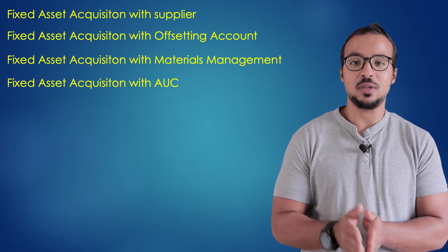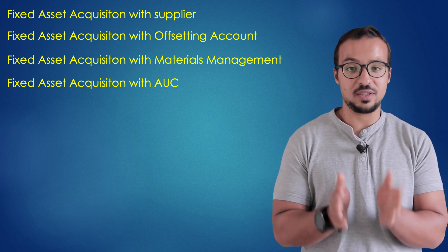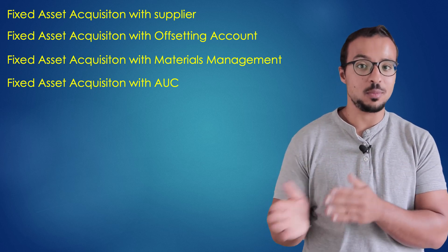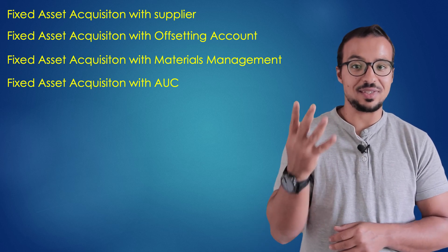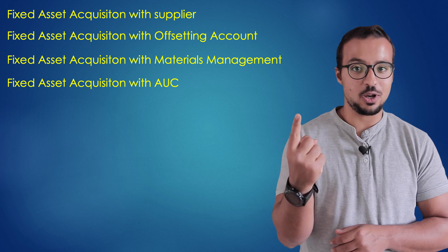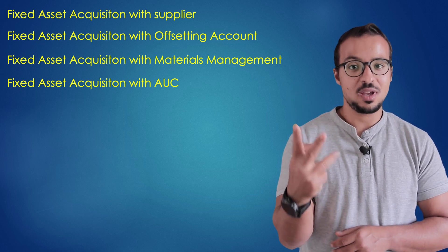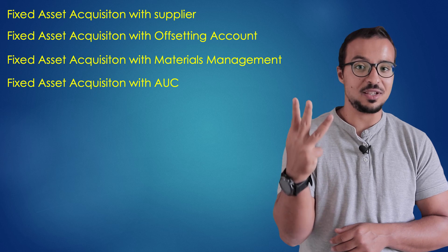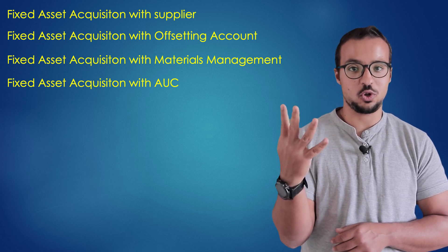The important thing is that you understand the different options available for asset acquisition and can differentiate between them. In summary, we have four processes: asset acquisition against a supplier, asset acquisition against an offsetting account, asset acquisition through materials management, and asset acquisition through asset under construction. Thank you for watching, and I'll see you again soon.